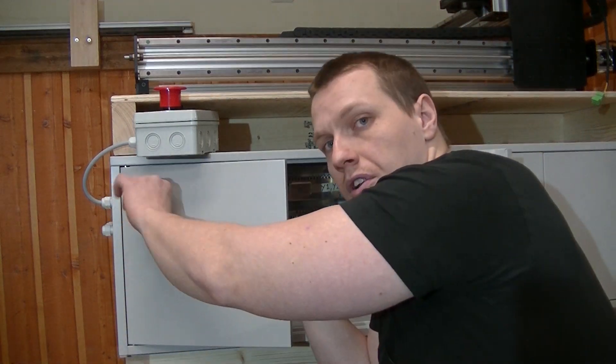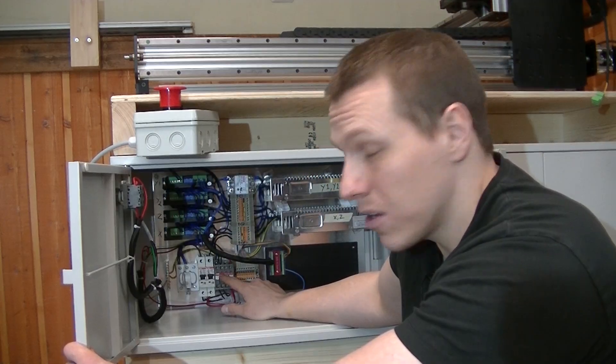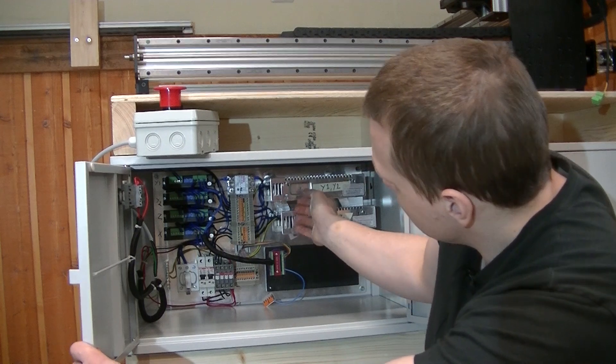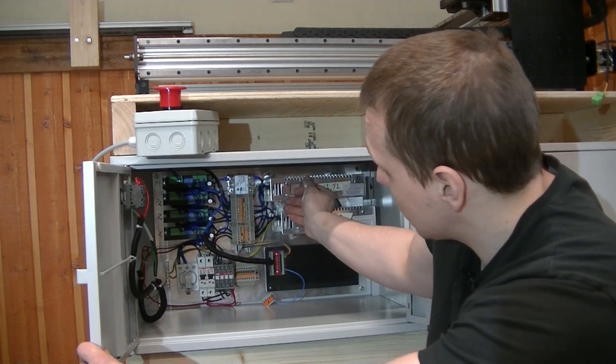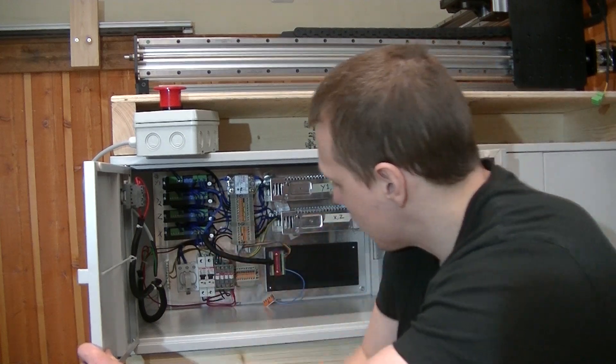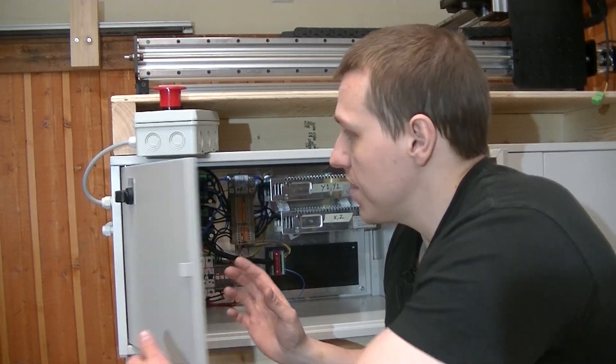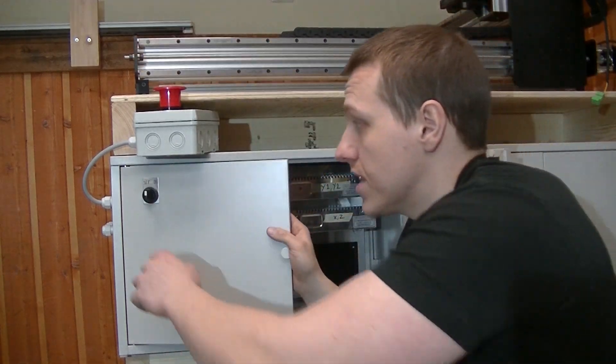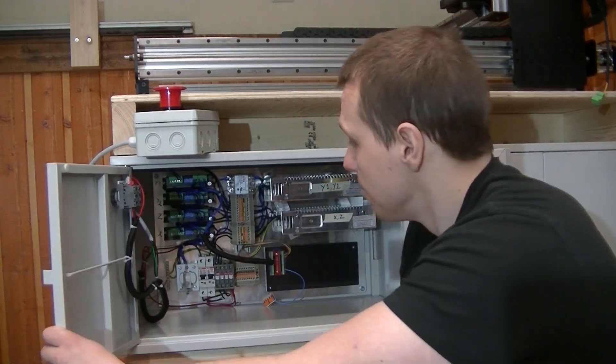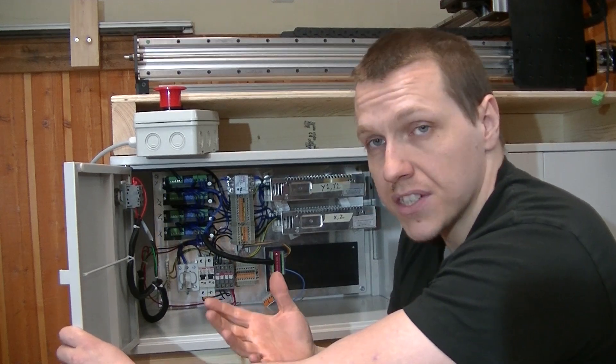So when I turn it on, this main contactor will pull. It will energize the power supply. It will energize the drives and so on. And the same thing when I turn it off, it will release it. And the emergency stop is hooked up on the same circuit as the off switch, this breaker. So that works in the same fashion. So to restart it, I have to reset the emergency stop and then turn it on again.